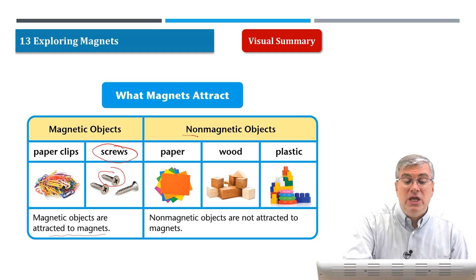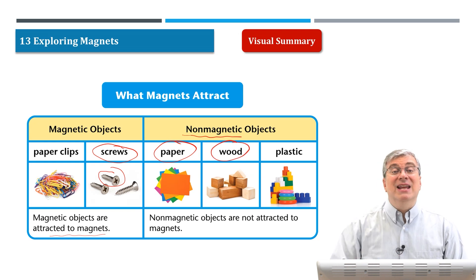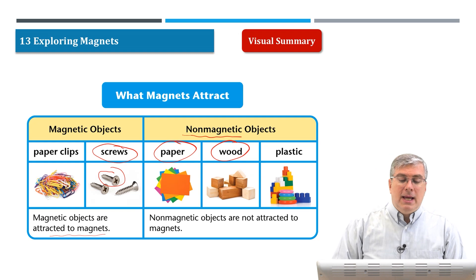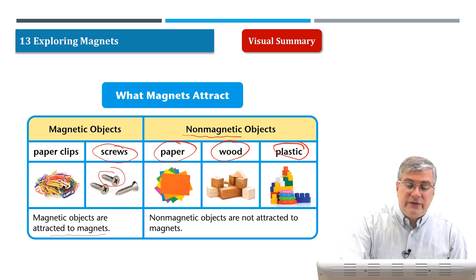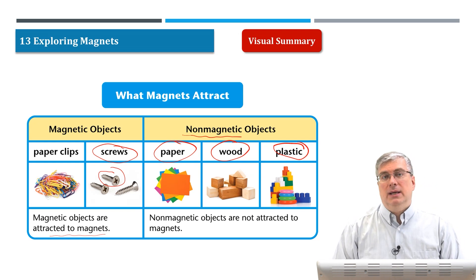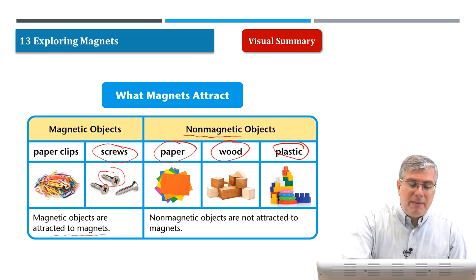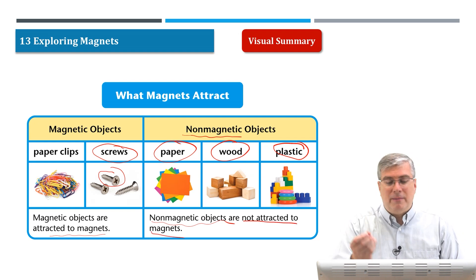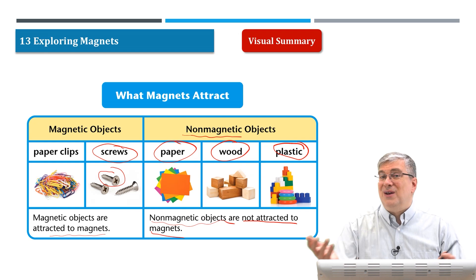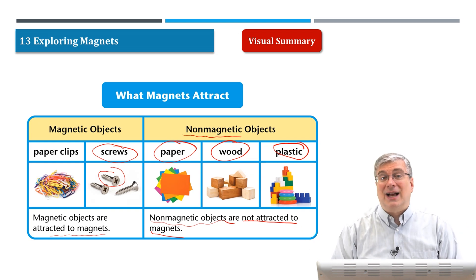But what are some things that aren't attracted to magnets? These are what we call non-magnetic objects. They're things like paper and wood. Actually, paper is made from wood. And plastic — plastic is not magnetic. These things do not have metals inside of them, so metals are usually the things that are magnetic. Non-magnetic objects are not attracted to magnets. If you have a magnet and you try to attract wood or a plastic toy, it's not going to work.